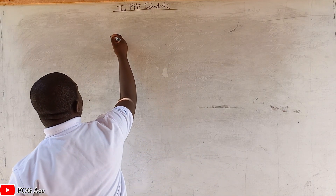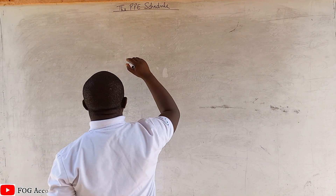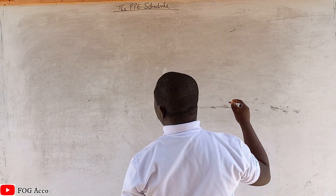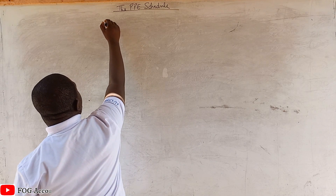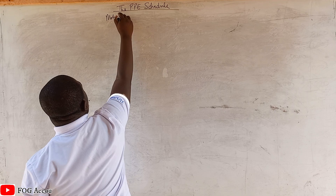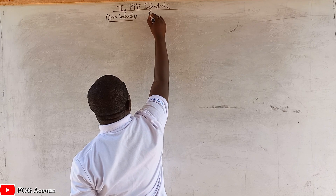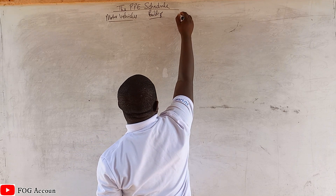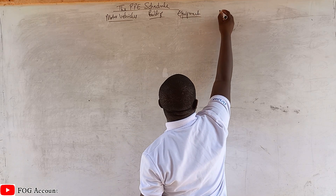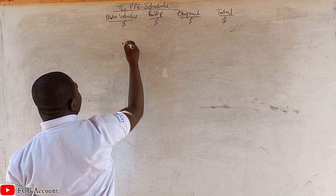So let me show you the PPE schedule. You call it the PPE schedule as I've written. Let's assume you have three items of Property, Plants and Equipment: motor vehicles, buildings, and equipment. I'll also show a total column and a currency sign — in this case I'm using the dollar sign.